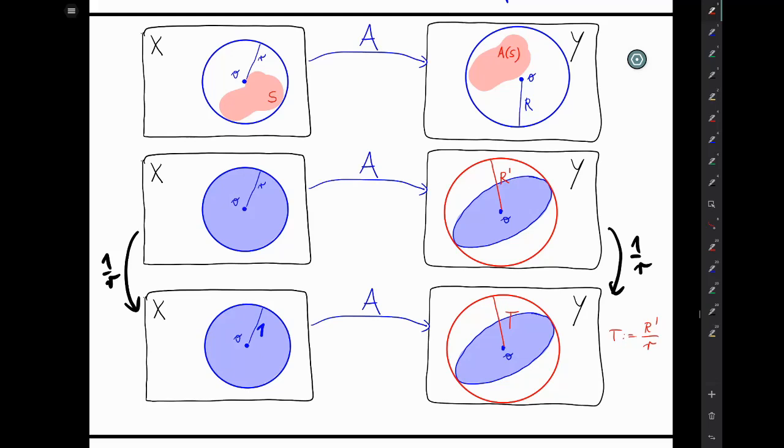So operator A is bounded if and only if it maps the unit disk in X to something that can be covered by a finite disk in Y. And without loss of generality, that finite disk can be considered around the origin. So let's write that down. So it means there exists a radius capital T such that for every little x in X with norm of x less than or equal to 1.